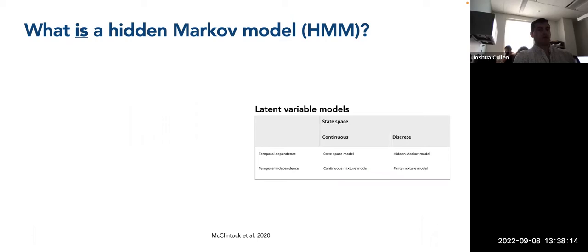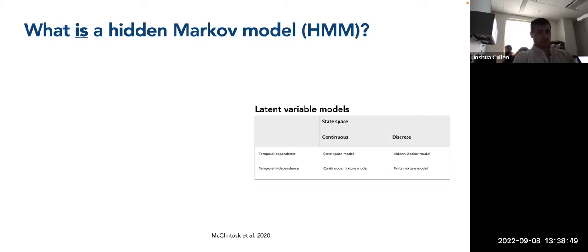Looking at a table of latent variable models — 'latent' meaning unobserved or hidden — we can consider two dimensions: continuous vs. discrete state space, and temporal dependence vs. independence. With temporal dependence and continuous states, you use a state space model. With temporal dependence and discrete or finite states, you use a hidden Markov model.